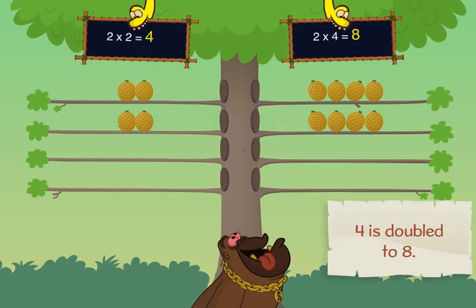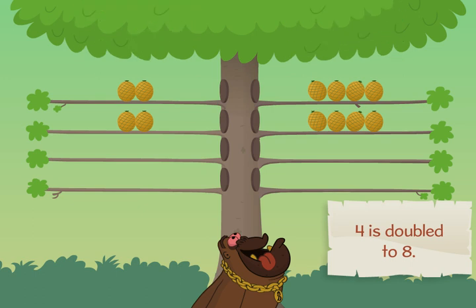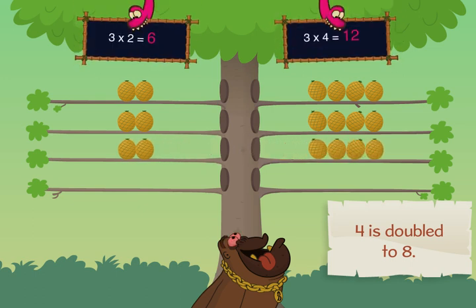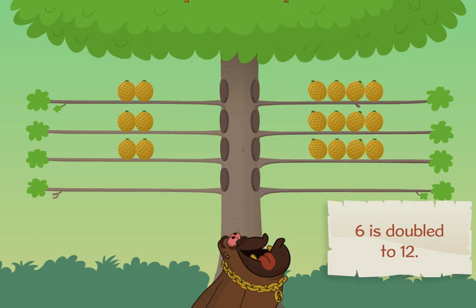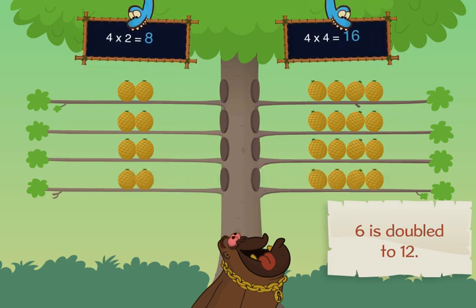Four is doubled to eight. Six is doubled to twelve. Eight is doubled to sixteen. Four times four is sixteen.